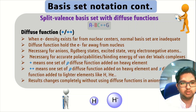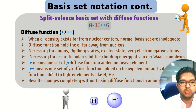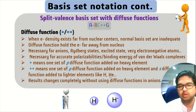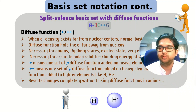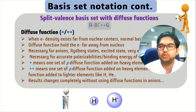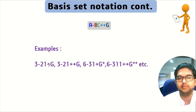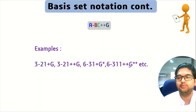Diffuse functions are necessary for accurately computing polarizabilities, binding in anions, and even van der Waals complexes. One plus means a P diffuse function will be added to the heavy elements. An S type diffuse function will be added to lighter elements like hydrogen and helium. Using this diffuse function the results will be totally different. Examples include 3-21G, 3-21+G, and 3-21++G — basis sets with diffuse functions and with diffuse and polarization functions combined.